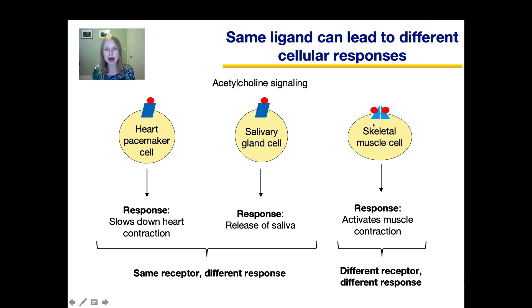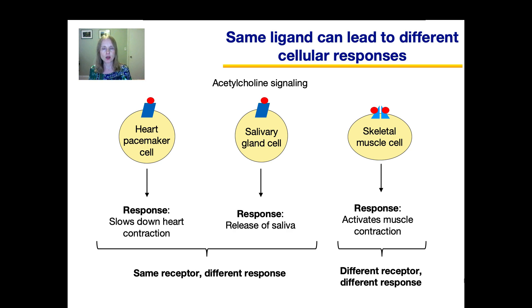In the skeletal muscle cell, acetylcholine actually binds to a different receptor, leading to yet another different response. Though we said the ligand must fit the receptor exactly, the binding groove in the skeletal muscle cell receptor is actually the same shape as the groove in the other receptor — so the actual interaction between the ligand and receptor is the same, just on a different receptor protein. The key takeaway is that ligand binding to the receptor is specific, but depending on which cell signaling pathway that receptor is connected to, you can get a different response.